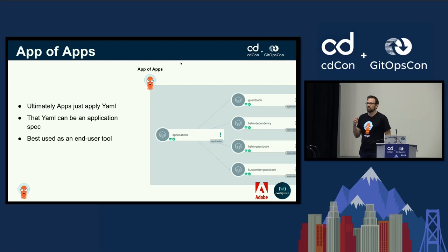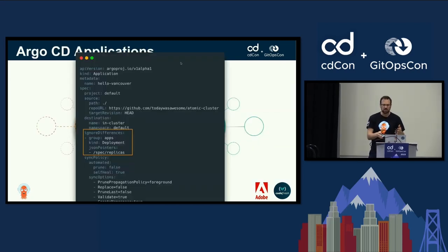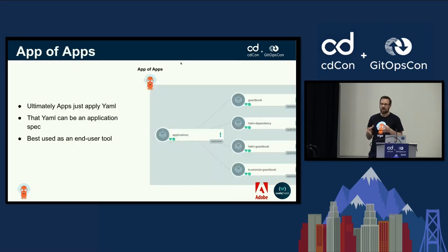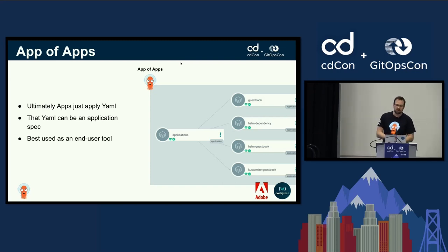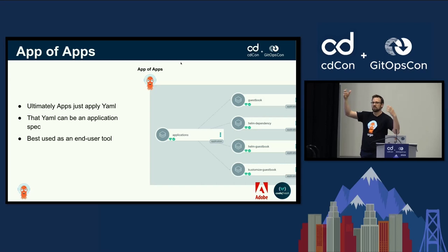Many of you have probably already heard of the app of apps pattern. If an application is a Kubernetes manifest with a policy, and it's just a custom resource I've created inside my Kubernetes cluster, then I can have an application point at a folder with just a bunch of applications in it — this is called app of apps. At Codefresh, we refer to it internally as a 'git source app' — an application that represents a Git source that has a bunch of other applications in it.